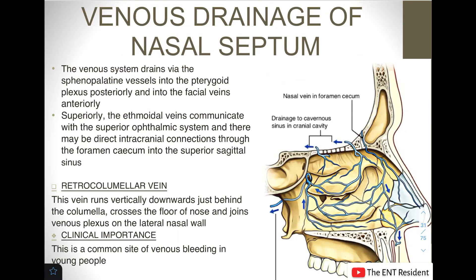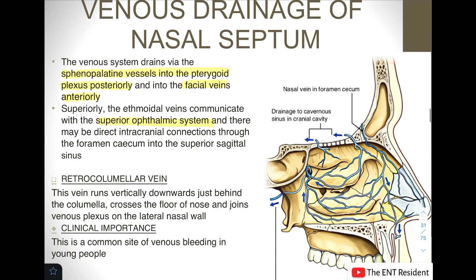Next, we come to the venous drainage of the nasal septum. The venous system drains via sphenopalatine vessels into the pterygoid venous plexus posteriorly and into the facial veins anteriorly. Superiorly, the ethmoidal veins communicate with the superior ophthalmic system, and there may be direct intracranial connections through the foramen cecum into the superior sagittal sinus. One vein particularly worth knowing is the retrocolumnar vein.